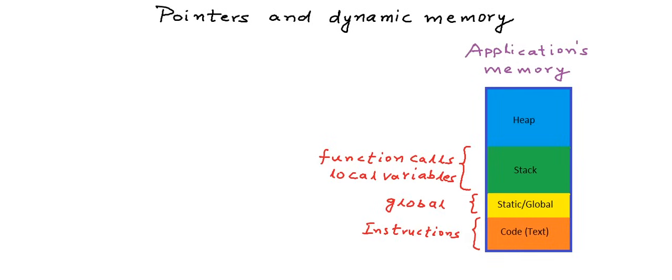The amount of memory set aside for these three segments — the text segment, the global variable segment, and the stack — does not grow while the application is running. We will come back to why we use this fourth segment, the heap, in a while.